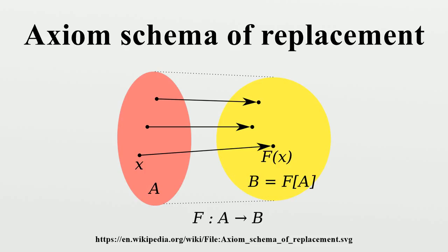Note that one can easily construct a well-ordered set that is isomorphic to ω2 without resorting to replacement — simply take the disjoint union of two copies of ω, with the second copy greater than the first — but that this is not an ordinal since it is not totally ordered by inclusion. Clearly then, the existence of an assignment of an ordinal to every well-ordered set requires replacement as well. Similarly, the von Neumann cardinal assignment, which assigns a cardinal number to each set, requires replacement, as well as the axiom of choice. Every countable limit ordinal requires replacement for its construction analogously to ω2.